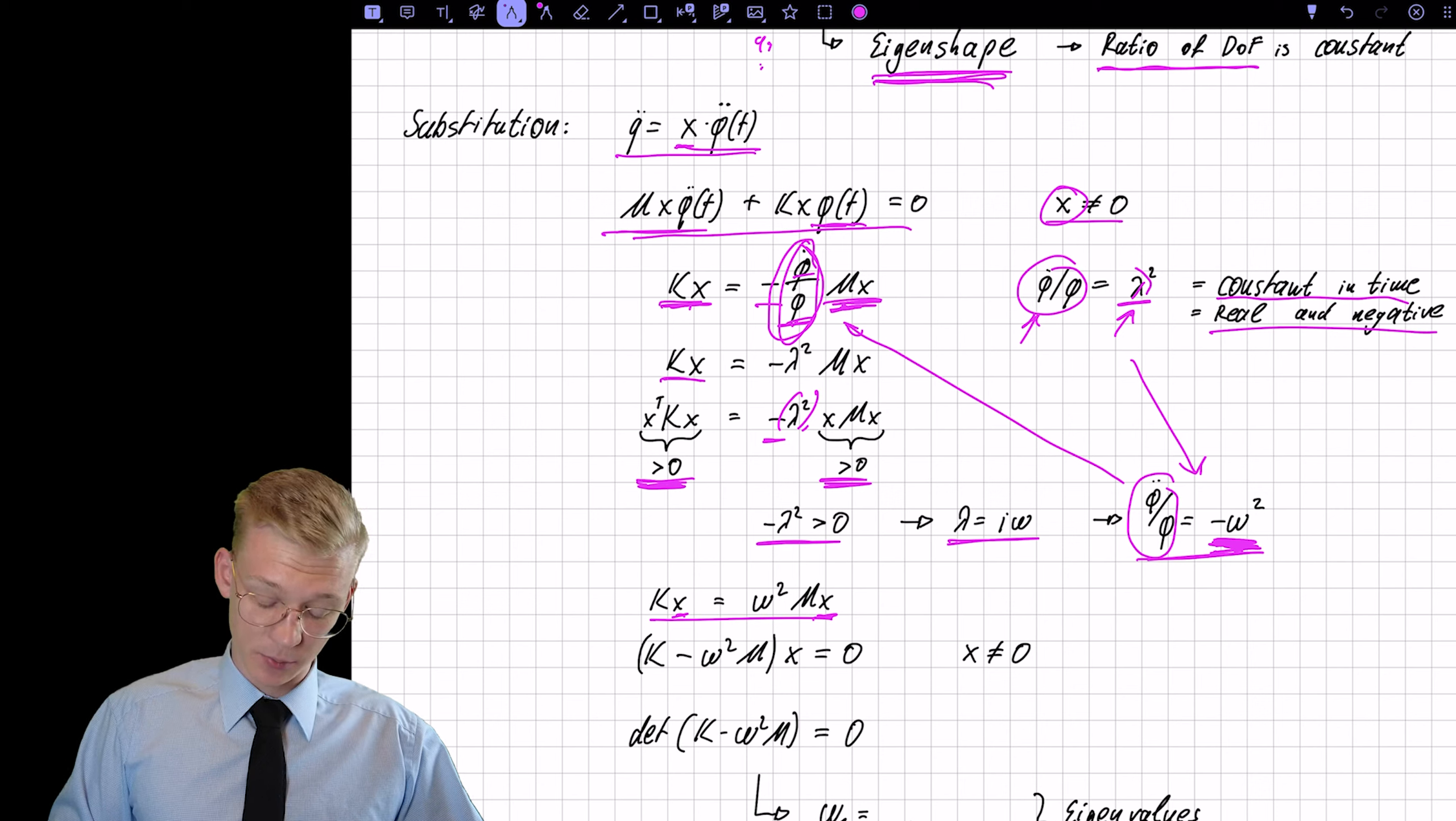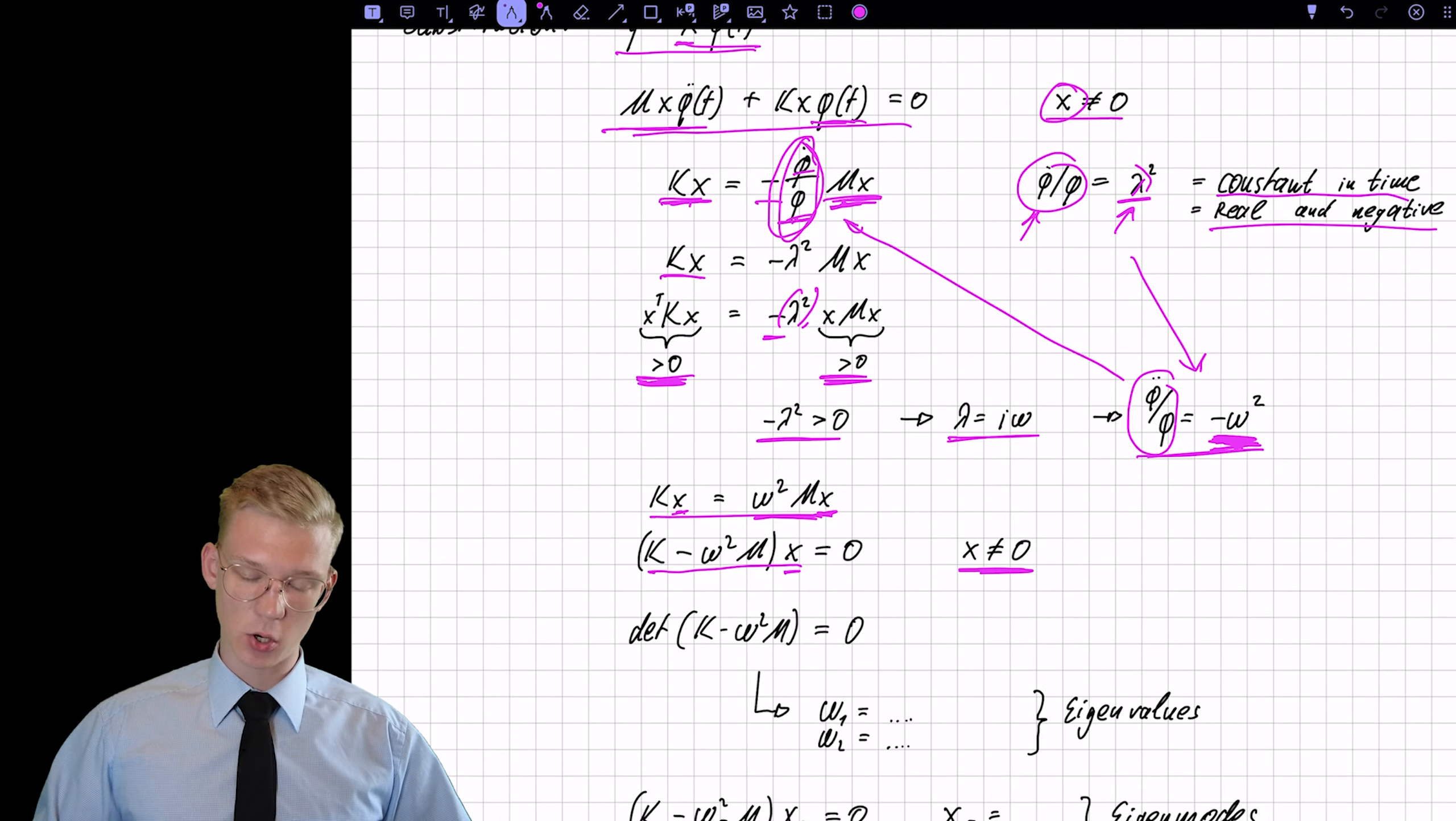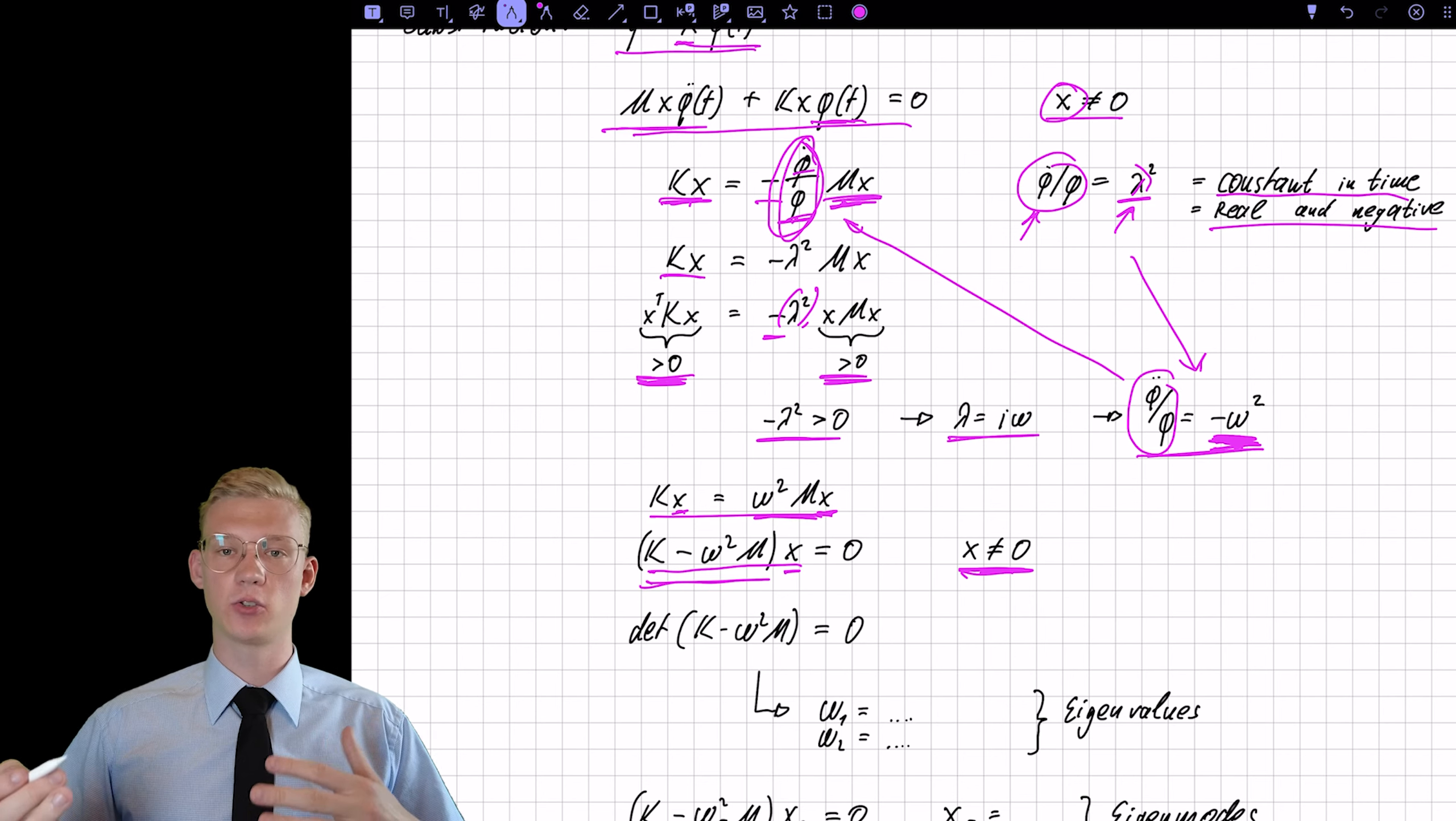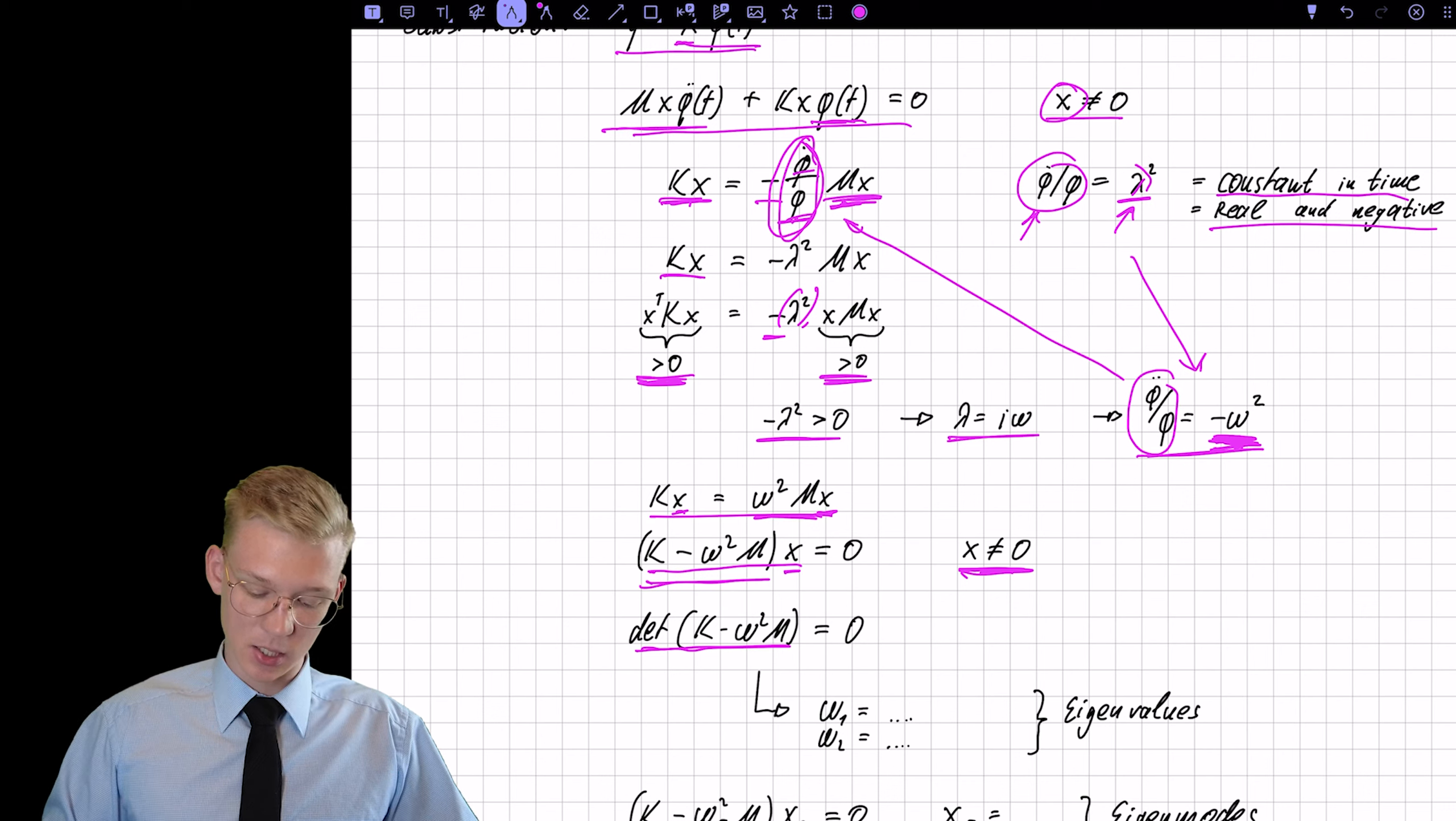So now if we substitute this term that we had here with omega, we have this one. So we have K x is equal to omega squared m x. So x is again our eigen shape that we had before. Now we subtract the right part of the equation from the left part. We remove x. Again, we do not work with x as 0 for a trivial solution. If we do not accept x as 0, this matrix can't have an inverse, and a matrix does not have an inverse when the determinant is 0.